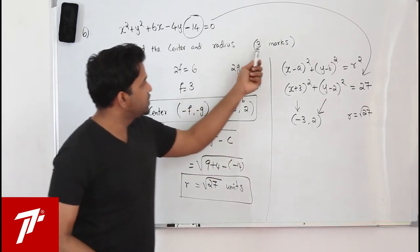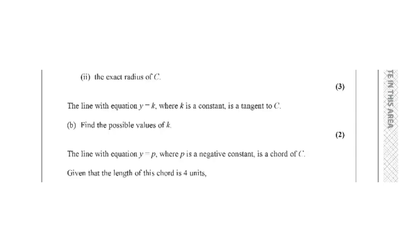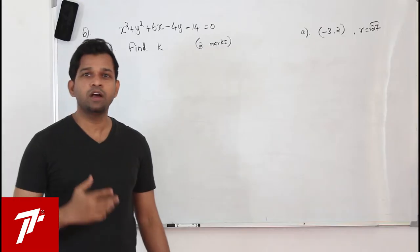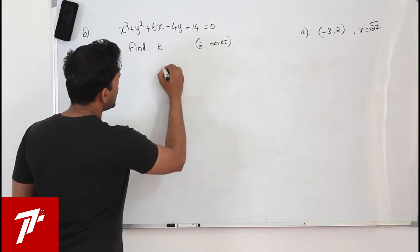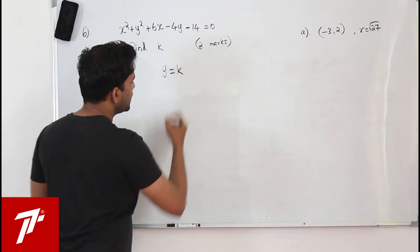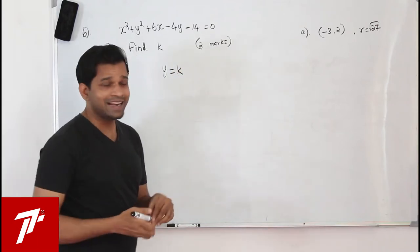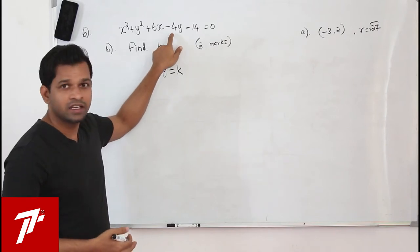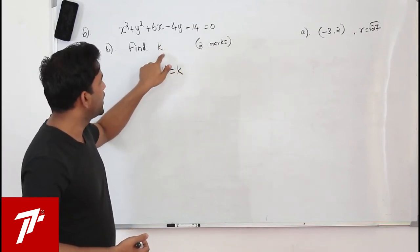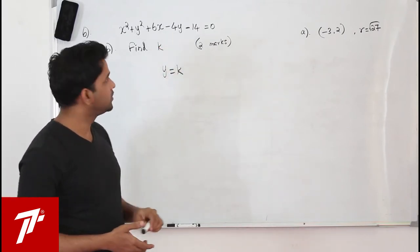This question has three marks. Part B: the line y equals k, where k is a constant, is a tangent to circle C. Find the possible values of k. This question has only two marks.